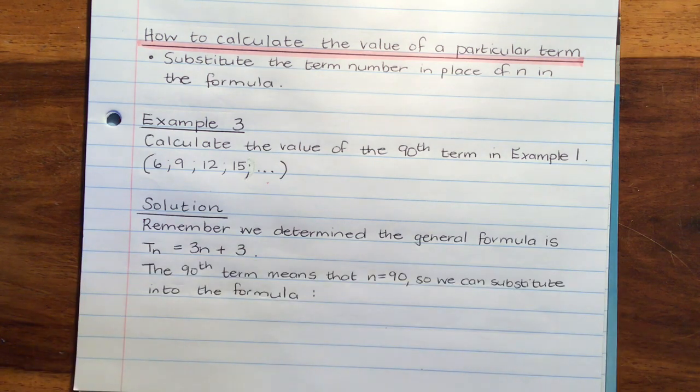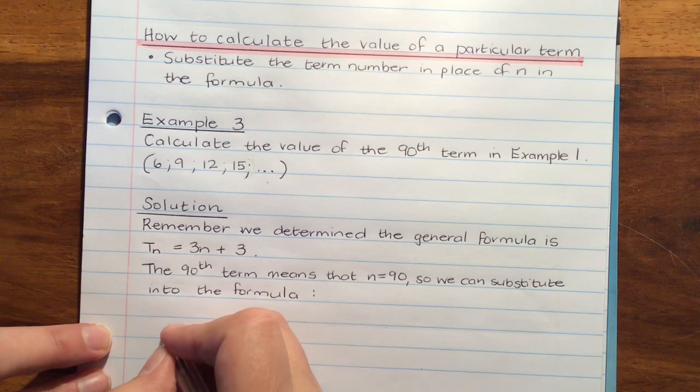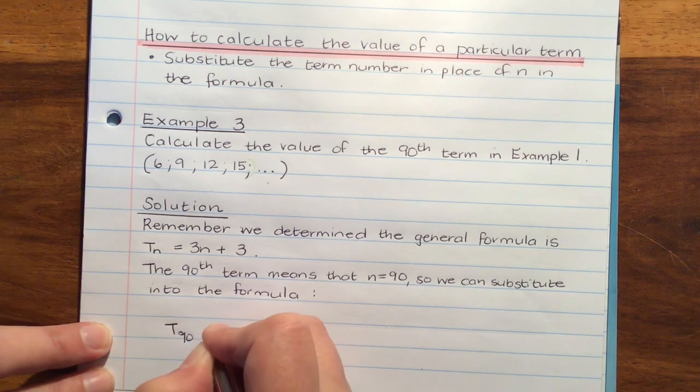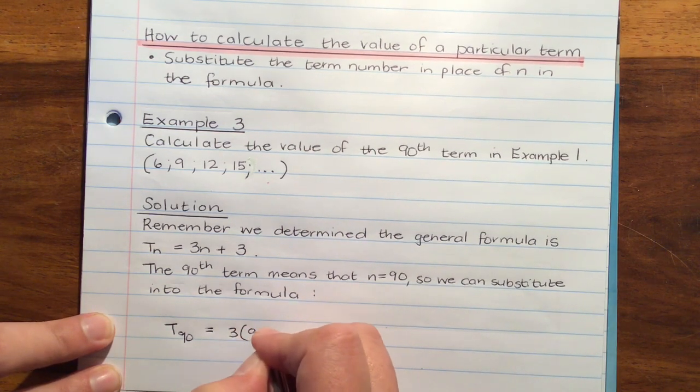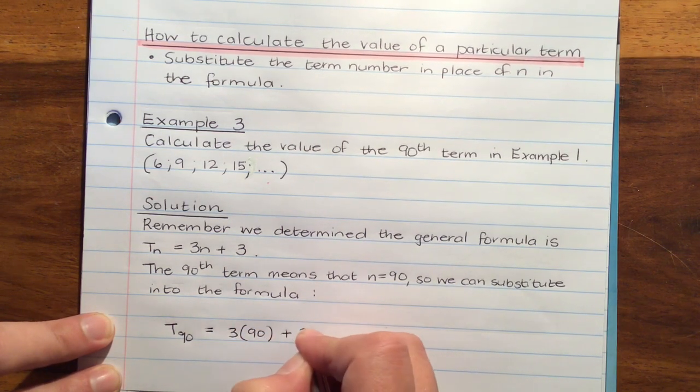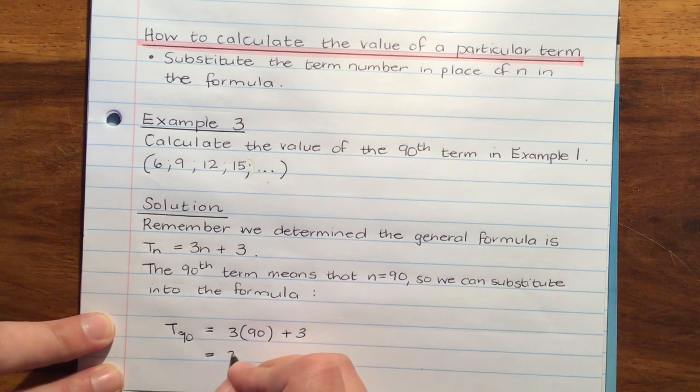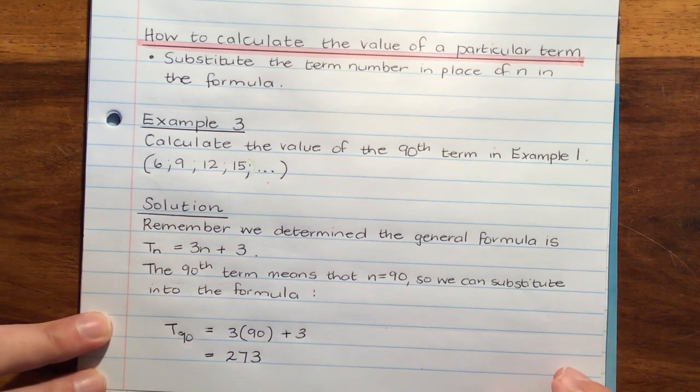So the 90th term means that n is 90. So that's what we're going to substitute into the formula. We're going to say T90 is equal to 3 times 90 plus 3. That's 270. So the answer is 273 is the value of the 90th term.